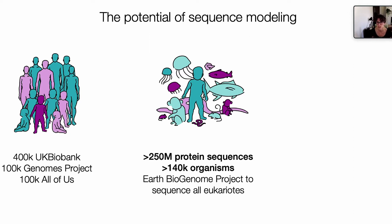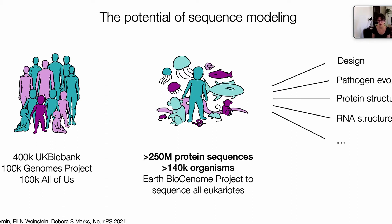The idea of using conservation across evolution for predicting the pathogenicity of variants is not new. I'm sure that you are all familiar with tools like SIFT and PolyPhen. But recently, there's been a lot of development in deep generative modeling, specifically for biological sequence data. And they've been shown to be extremely successful for lots of applications, such as protein design, pathogen evolution, structure prediction, et cetera.